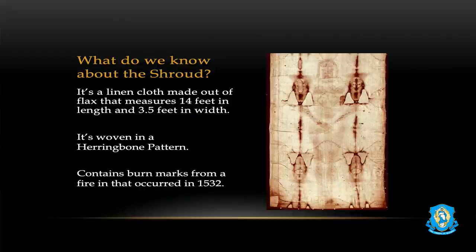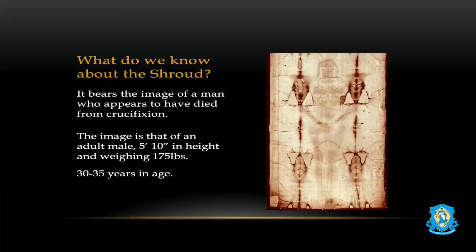It contains burn marks from a fire — that's what those two edges are that look like poles — from a fire that happened in 1532. It bears the image of a man who appears to have died from crucifixion. The image is that of an adult male, 5 feet 10 inches in height, weighing about 175 pounds. One scientist said his physique was muscular and well-built. It is estimated this person was 30 to 35 years of age.